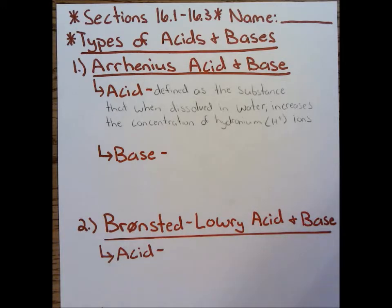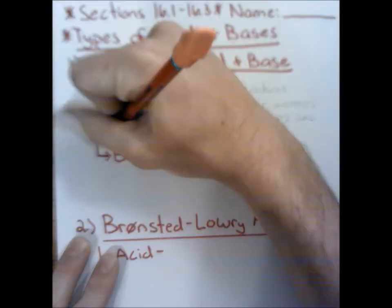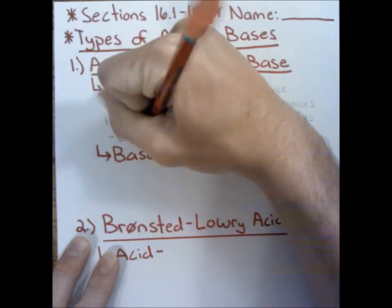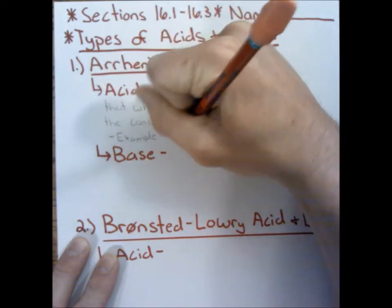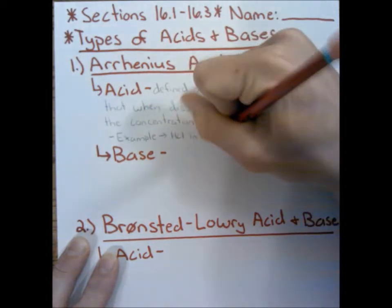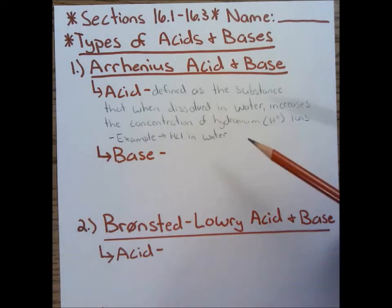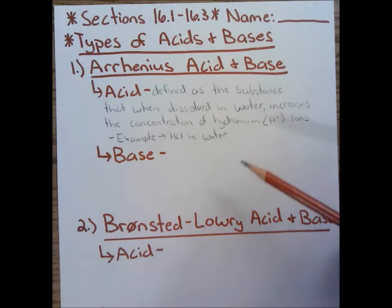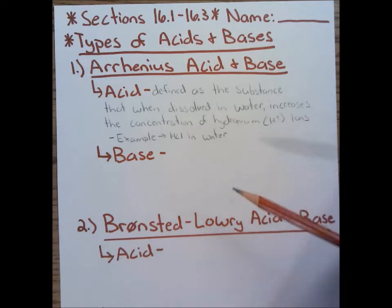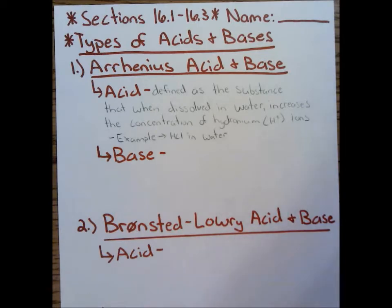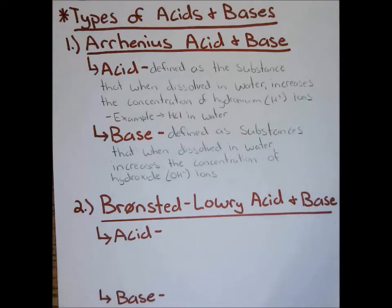A good example of this is HCl, or hydrochloric acid, in water. Another key point: for our acids and bases, they are, unless stated otherwise, dissolved in water — they are aqueous solutions. An Arrhenius base is defined as a substance that, when dissolved in water, increases the concentration of OH⁻ ions.